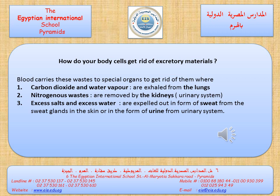How do your body cells get rid of excretory materials? We said that we have three types of excretory materials: the first one is carbon dioxide and water vapor, the second one is nitrogenous wastes, and the third one is excess salts and excess water. The blood carries these wastes to special organs to get rid of them.